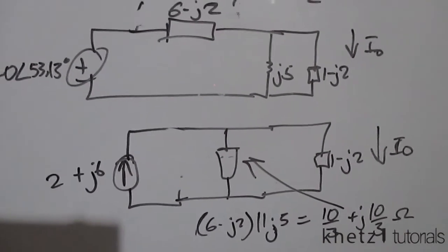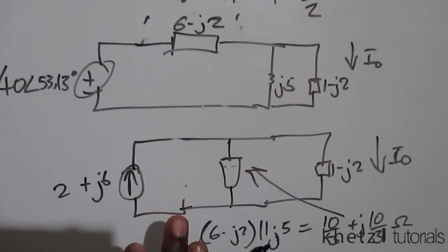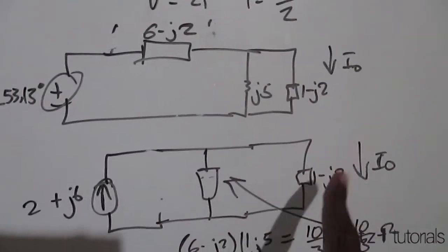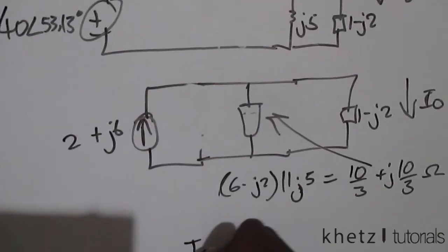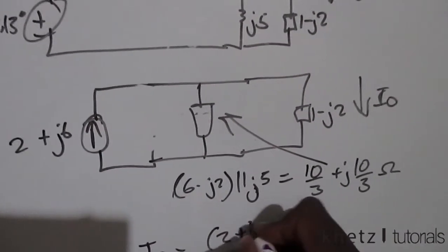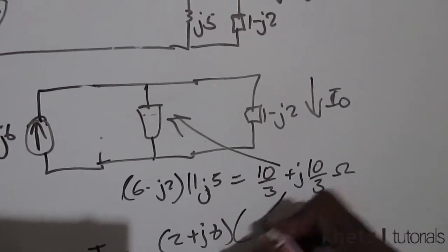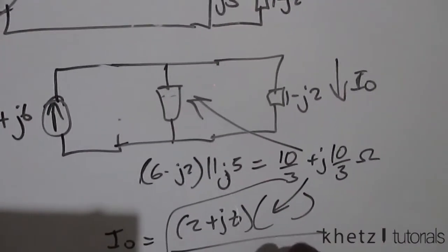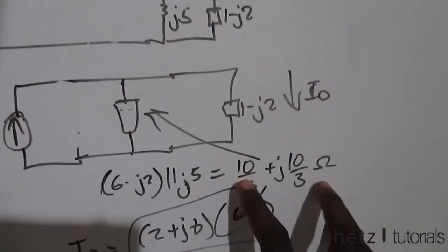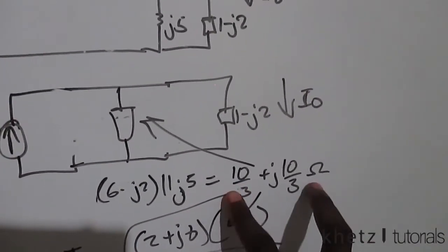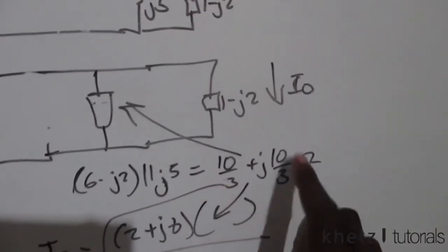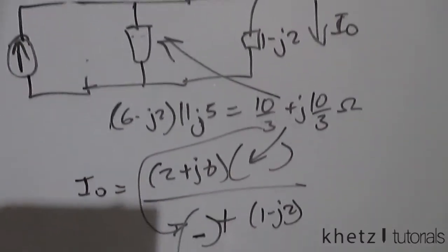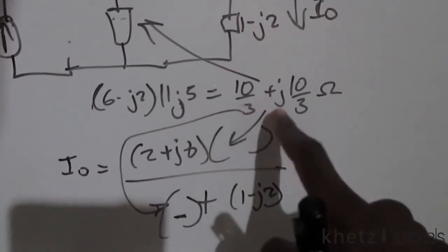Now that we have that, we can do current division. So I_O equals (2 + j6) multiplied by this impedance value, divided by that same value plus 1 minus j2. Wherever you see the arrows, substitute 10/3 plus j10/3. You can stop here since we weren't told where to stop.